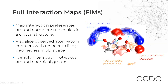We have already turned on the hydrogen bonds, and we observe that these hydrogen bonds are falling exactly where we would expect the interaction to be, thanks to the prediction of the full interaction maps — except for this one here, which is outside the area. So the question would be: what does this mean for the stability of the structure?